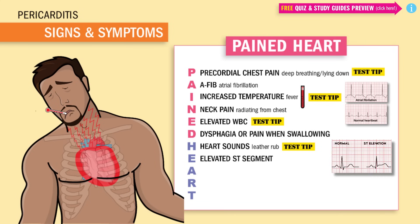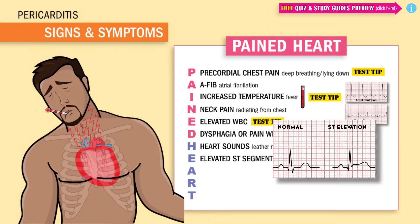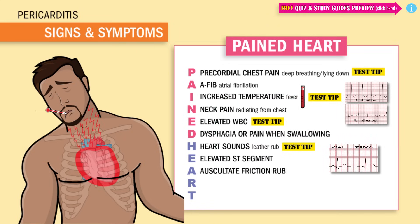E is for elevated ST segment, usually present in extreme conditions. ST elevation happens from all the pressure squeezing the heart's ventricles, not allowing it to expand and relax — sort of like a big cramp. A is for auscultate. Remember that pericardial friction rub we just heard? It sounds like leather rubbing together, classically heard near the left lower sternal border.